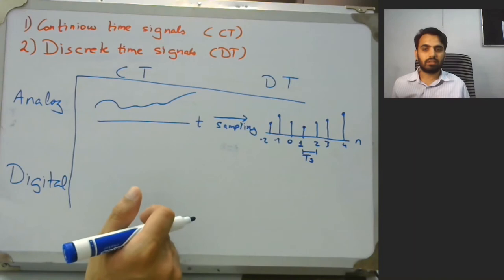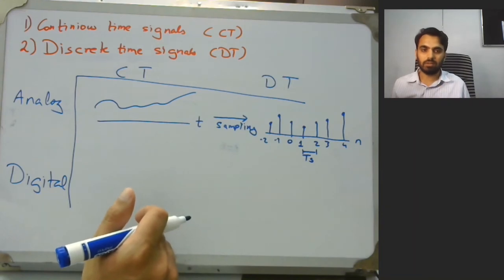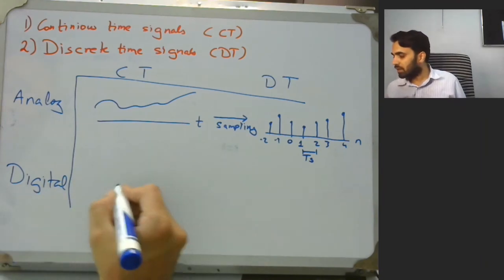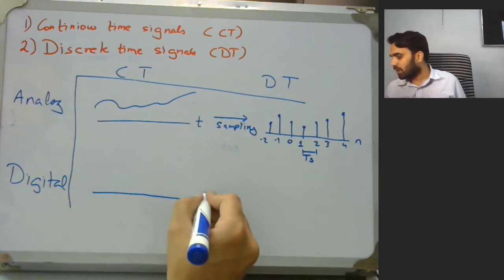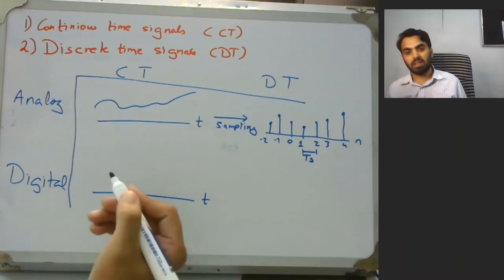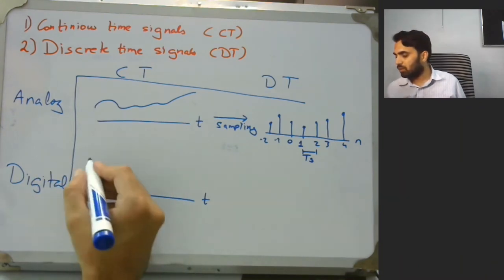Analog because on the y-axis we can have infinite values. Now let us move towards continuous time digital signals. For that again we would have a time T and we can have a certain specific value and that value would be continuous.